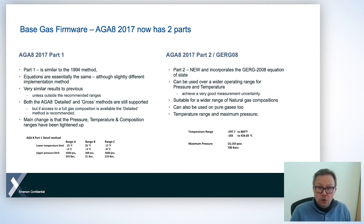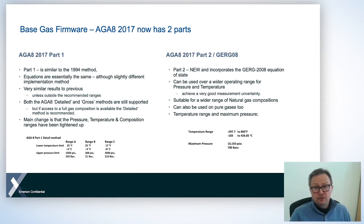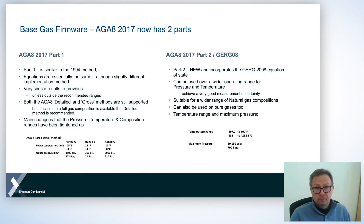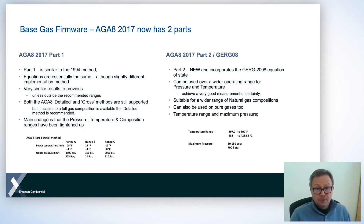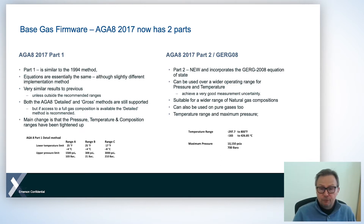If we look at the all-new AJ8 part two, this incorporates the GERG 2008 equation of state. This can be used for a much wider range of pressure and temperature situations as well as a wider range of gas compositions. The temperature range goes from minus 300 to plus 800 degrees Fahrenheit and up to 10,000 PSI.